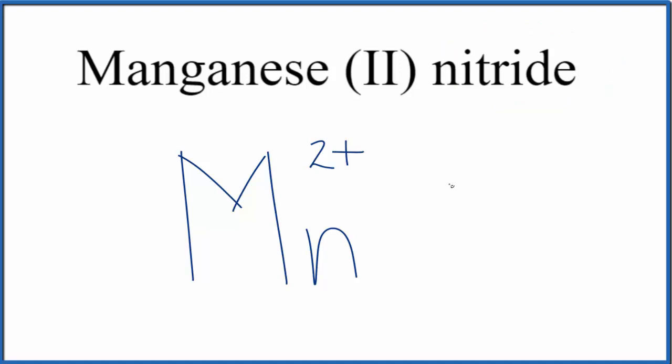The nitride, that's from nitrogen. Nitrogen on the periodic table will form ions with a 3 minus ionic charge. So the nitride ion is N3 minus.